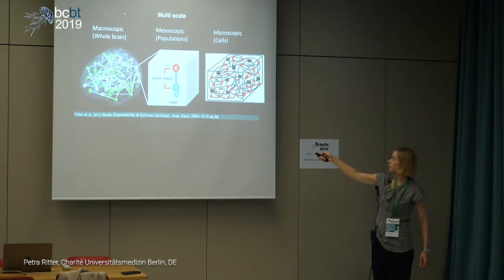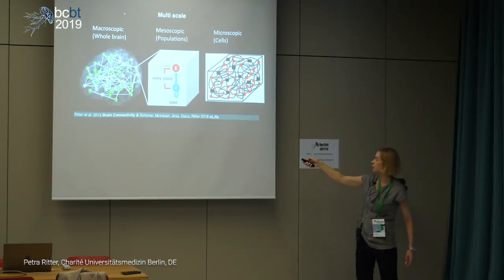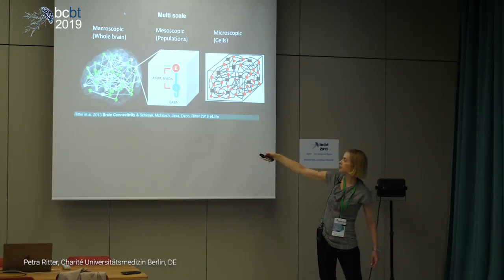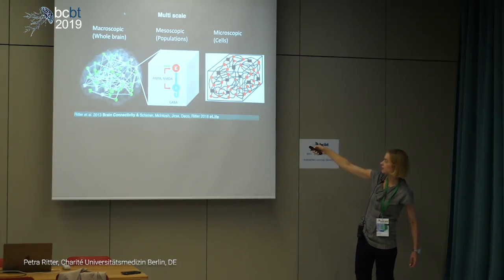Here's one example: the reduced Wong-Wang model, where we have a mean field description of excitatory and inhibitory populations. There is neuromodulation that averages across the entire population — we have NMDA coupling, excitatory coupling, and inhibitory GABAergic coupling within a population. This sits in each of the nodes and generates differential equations.